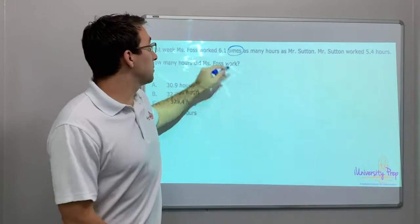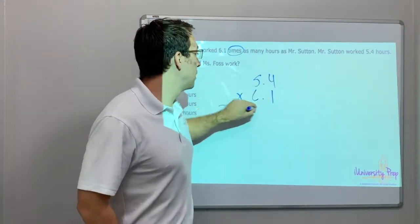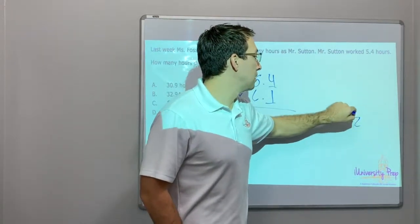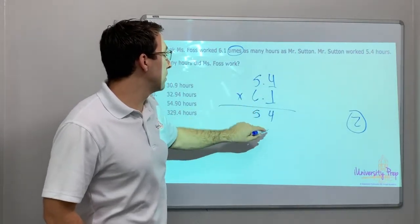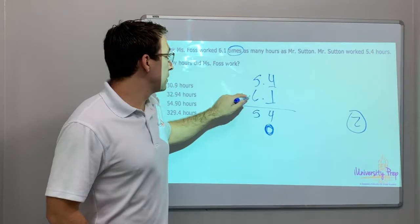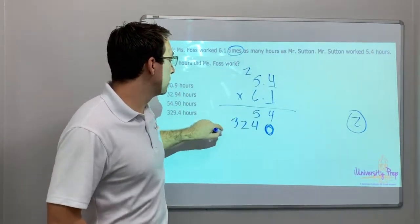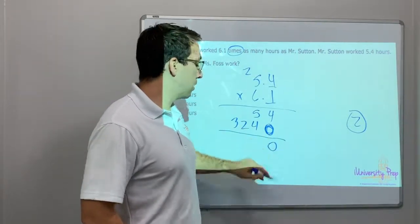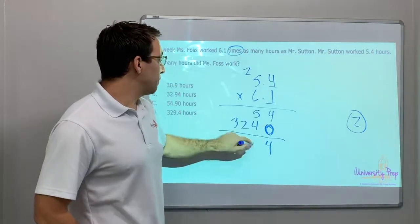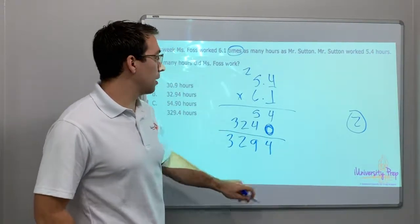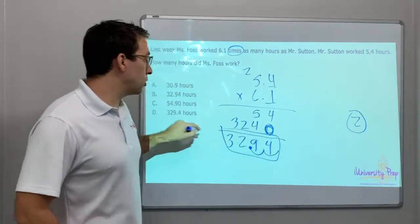5.4 times 6.1. There's two decimal places, so we know our answer will have two. One times four is four, one times five is five. Add a zero. Six times four is twenty-four, six times five is thirty, plus two is thirty-two. Four plus zero is four, five plus four is nine, two and three. We have two decimal places, one, two, so our answer is 32.94.